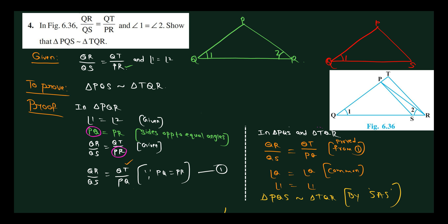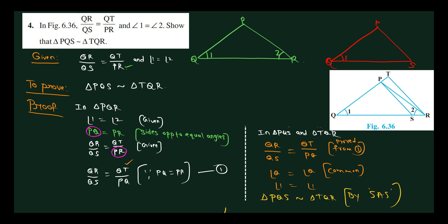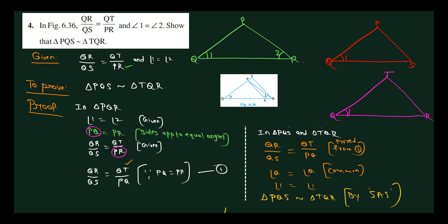Now I need the TQR triangle. I am overwriting on PQS to get the TQR triangle. So this is T, this is Q, and this is R. Now let me take triangle PQS and triangle TQR. Everyone observe the two triangles.